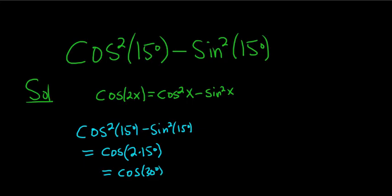Right? It's because x is 15, so you get 2 times 15. That's how we got that. And then 2 times 15 is 30. And the cosine of 30 degrees is the square root of 3 over 2.